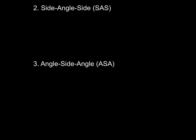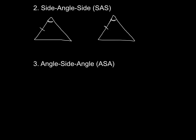Another method is side-angle-side, or SAS. If two sides are congruent and the angle between them is congruent, that proves congruence. The angle has to be between the two congruent sides. If the angle is not located between the two sides, it does not work. It has to be exactly side-angle-side.